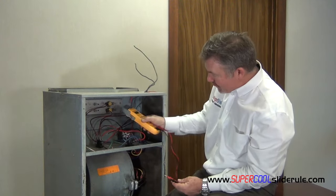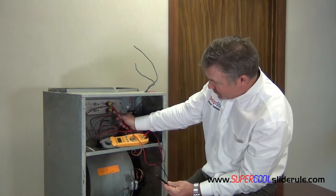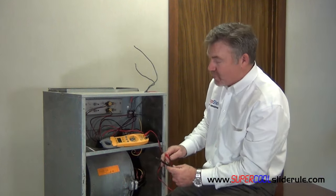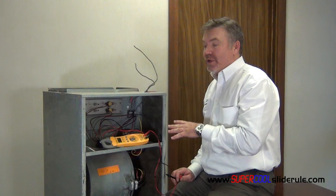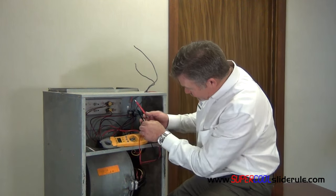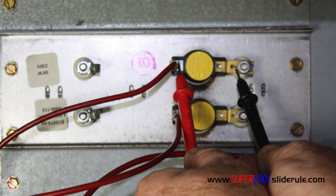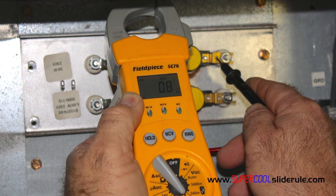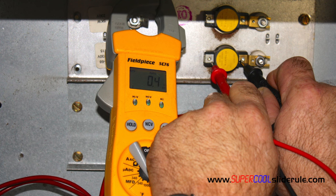What we would then do is we would then test across our limit switch. Now, the limit switch, the function of it, is it shuts the electricity off in the event that the unit gets too hot. So, we use a tester on each side of the limit switch. Our resistance should be very, very little. Here it's 0.8, 0.8 is good. Checking the one beneath it is 0.4.